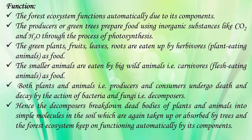They prepare food in the form of leaves, fruits, tubers, etc. These green plants, fruits, leaves, and roots are eaten up by the herbivores, that is plant-eating animals, as food. The smaller animals are eaten up by the larger animals or the wild animals, that is carnivores or flesh-eating animals, as food. Both plants and animals — that is, producers and consumers — undergo death and decay after completing their life cycle.